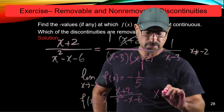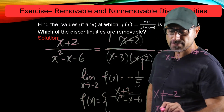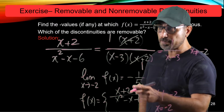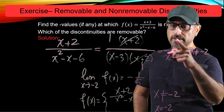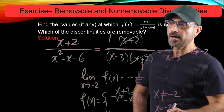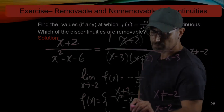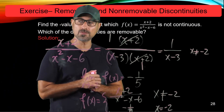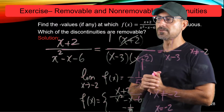If we redefine f so that f of x equals (x plus 2) over (x squared minus x minus 6) whenever x is not equal to negative 2, and at x equals negative 2 we assign the limit value of negative 1 over 5, then the redefined function becomes continuous at x equals negative 2. For that reason, x equals negative 2 is a removable discontinuity.